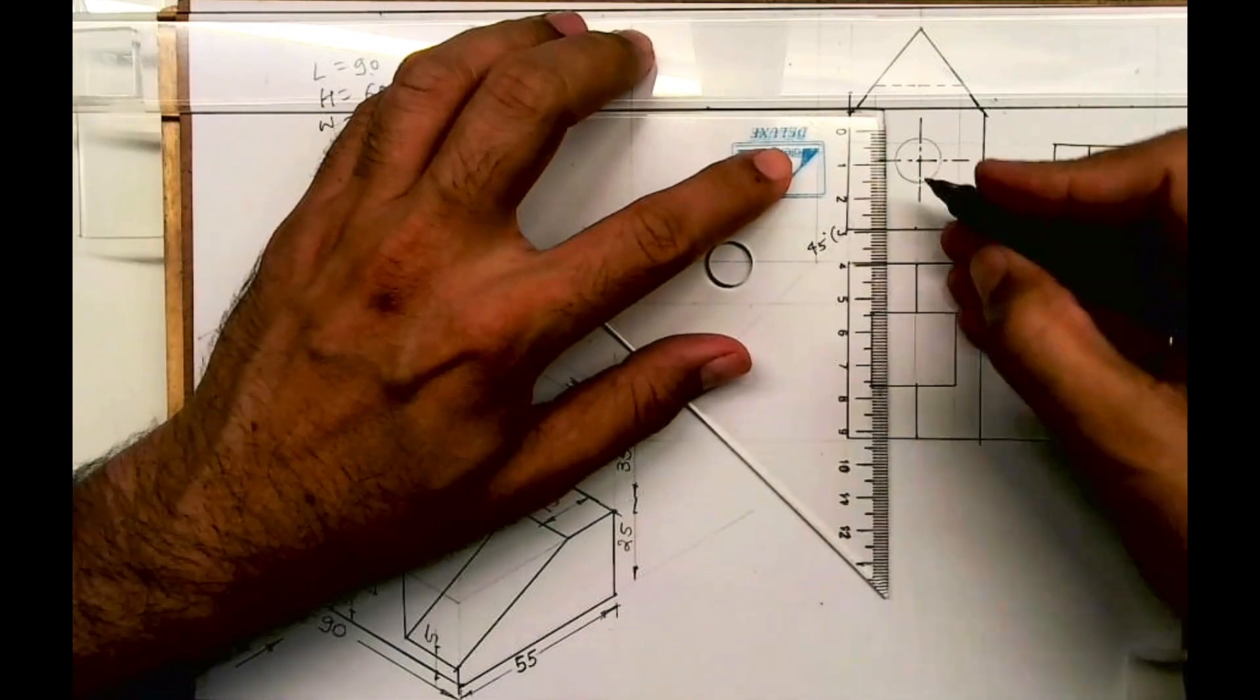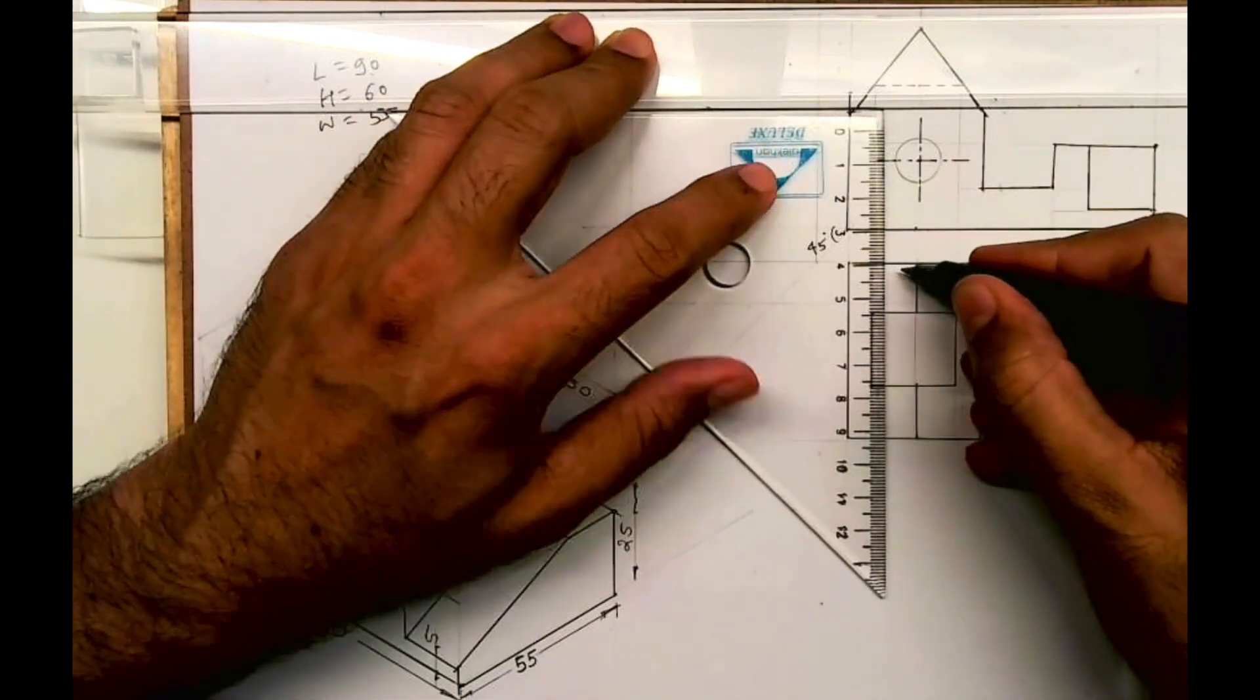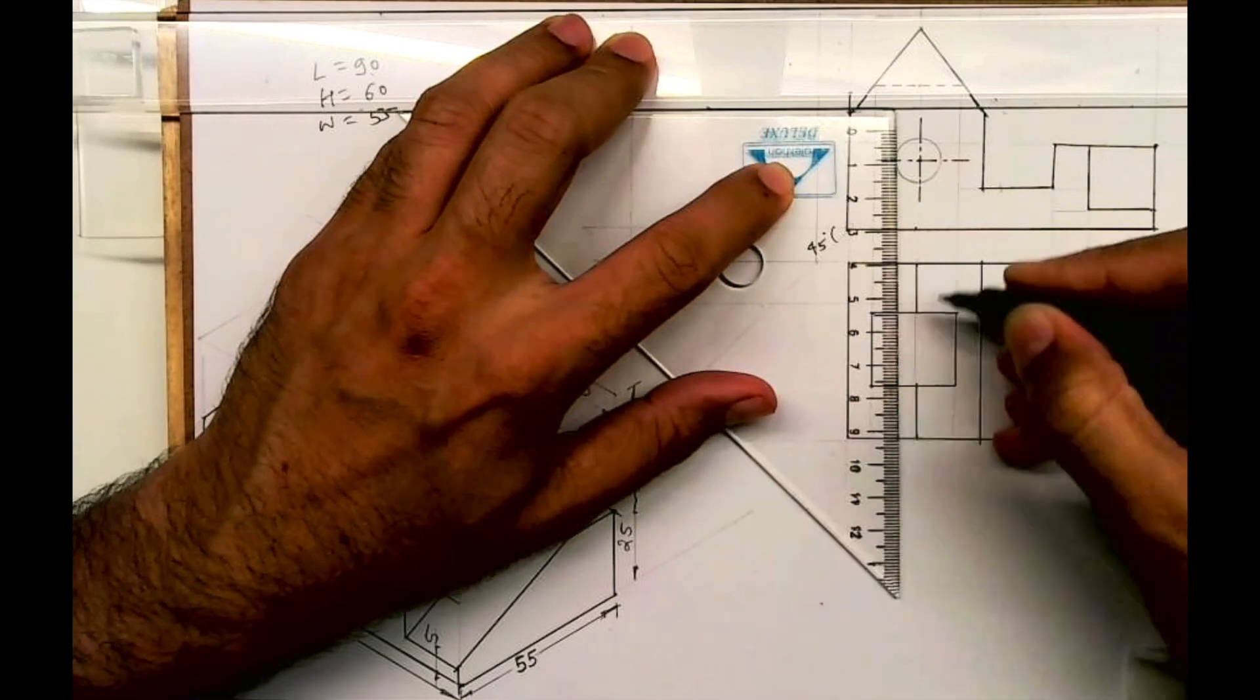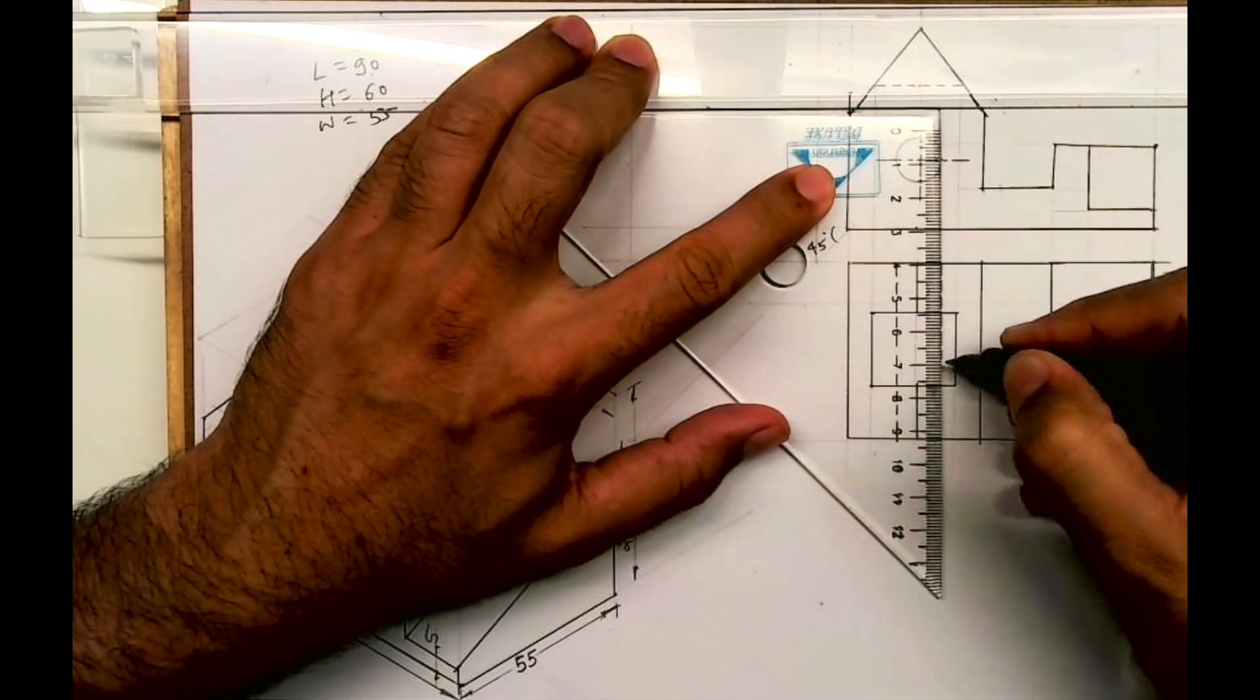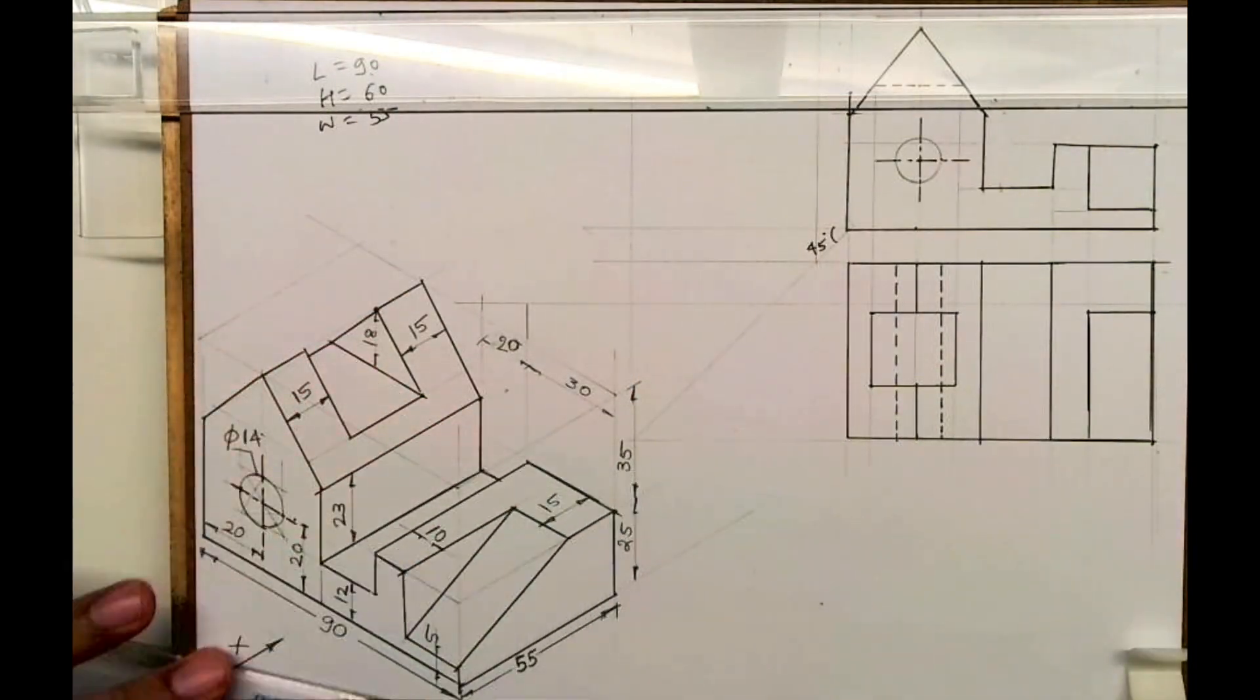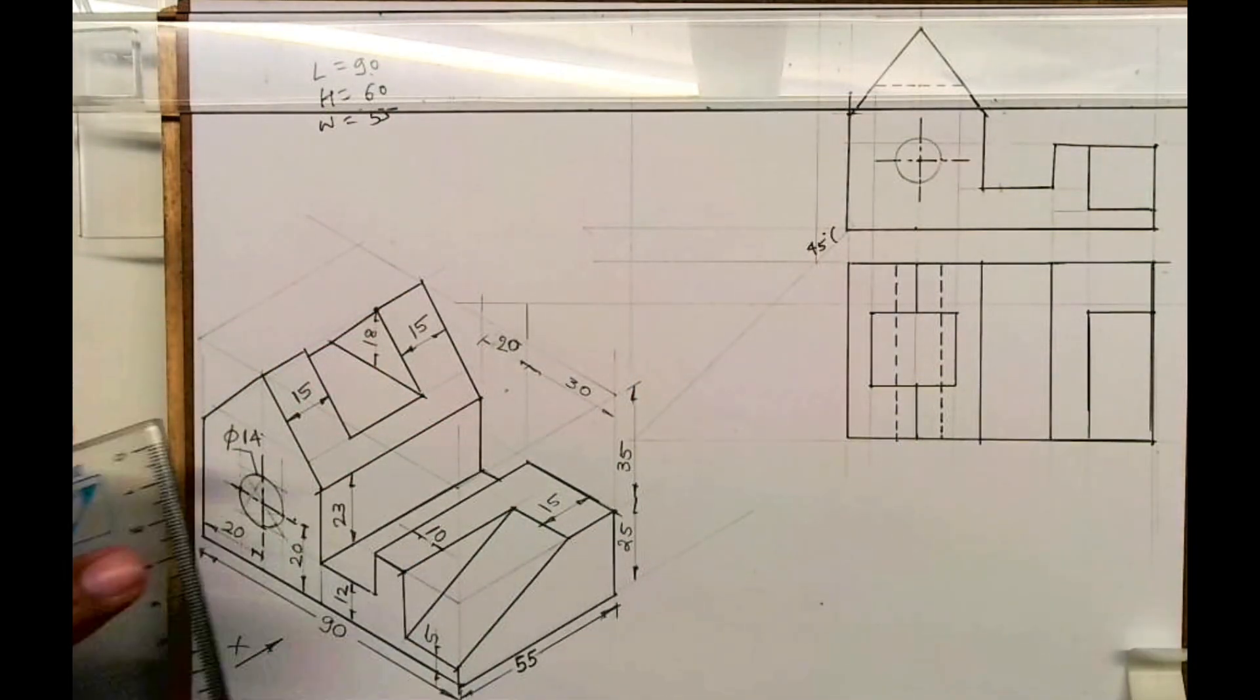This middle line will be dark like this. Now we need to draw dotted line for the circle - extreme left and right points. So we get top view of the circle. Now we are done with the entire top view.